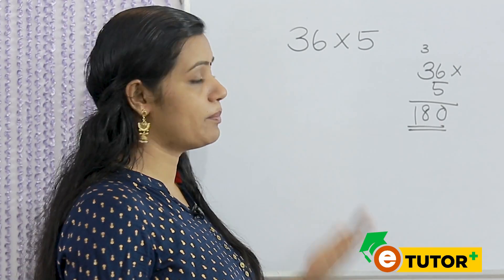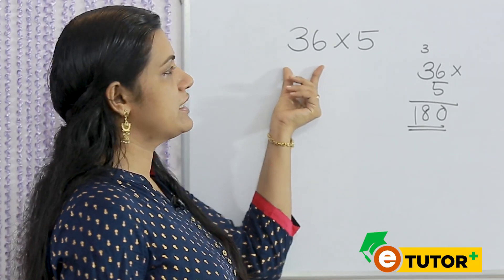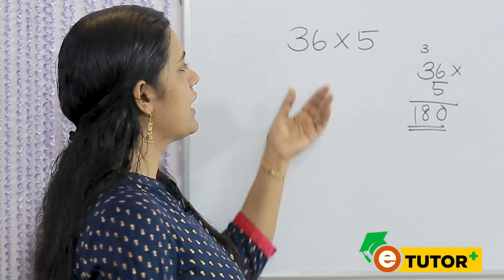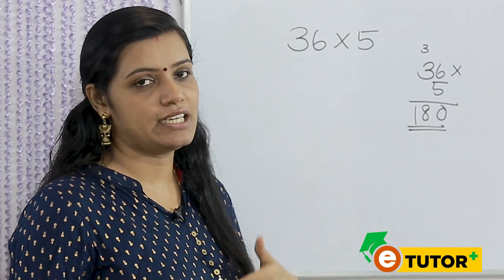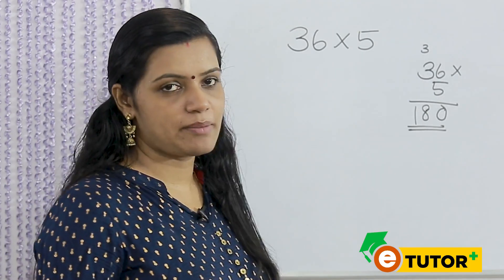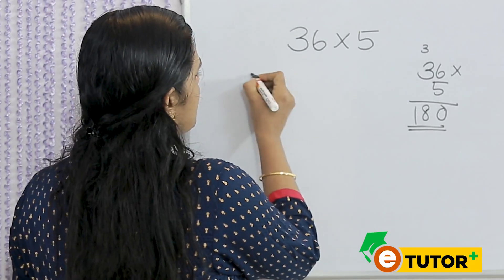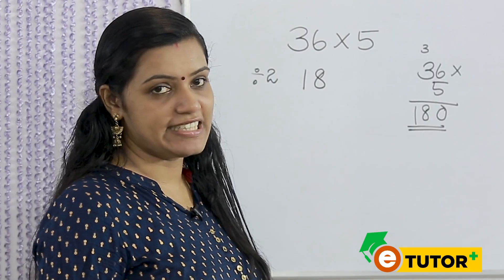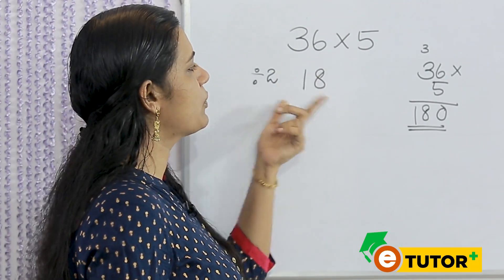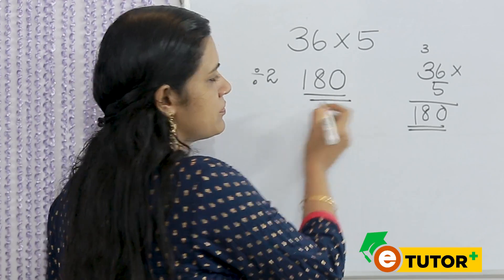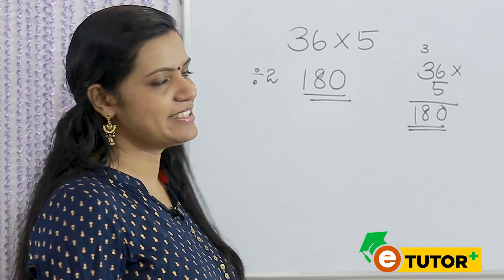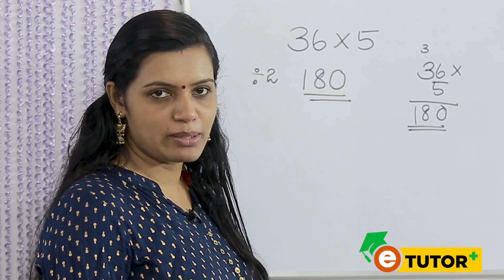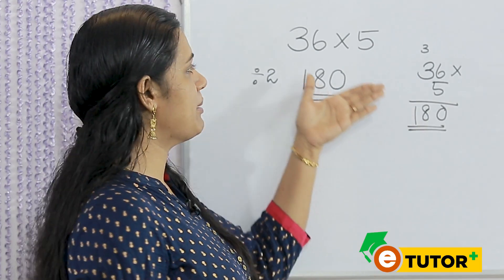We will multiply with 5 using one step. I will draw number 36. 36 multiplied by 5 — the number 36 divided by 10 is half of it. How do you get half of 36? That is 18. Now we have a 0 at the end, so 180. If we multiply it, it's 180. It's simple. That number is half.